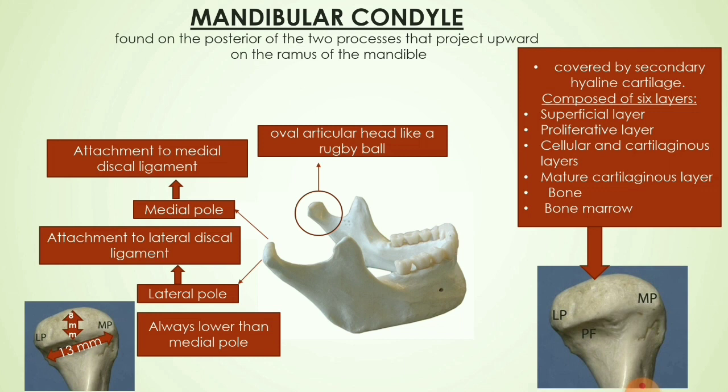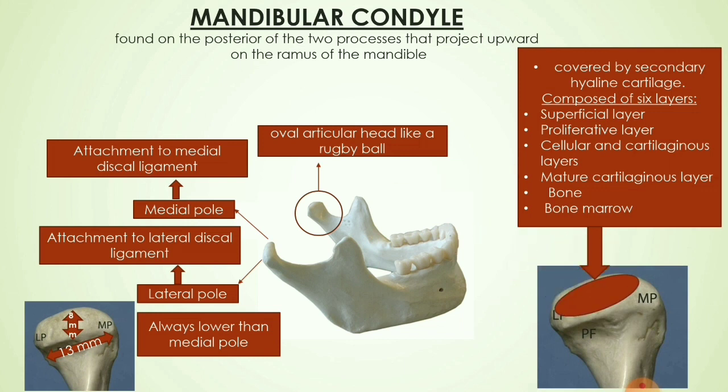The condyle is covered by secondary hyaline cartilage and is composed of almost six layers: the superficial layer, proliferative layer, cellular and cartilaginous layers, mature cartilaginous layers, bone, and bone marrow.